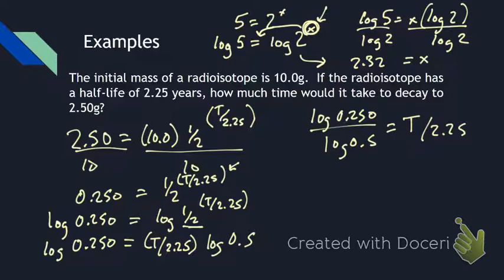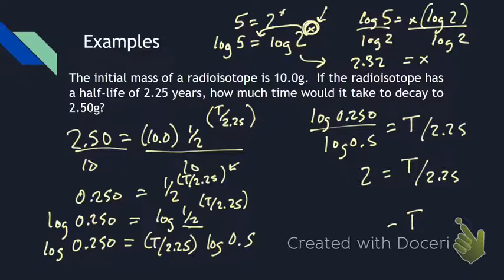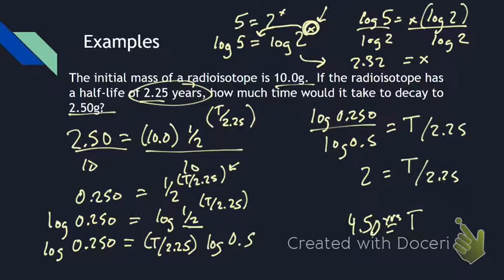Calculating log 0.250 divided by log 0.5 gives us 2. So T over 2.25 equals 2, and multiplying both sides by 2.25 gives T equals 4.5. The units are years, and with three significant figures, the answer is 4.50 years.